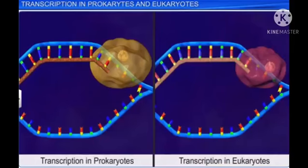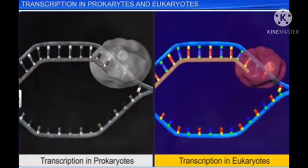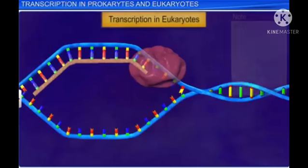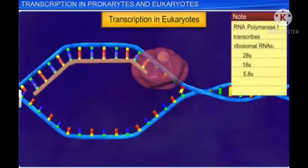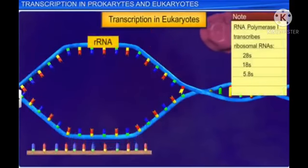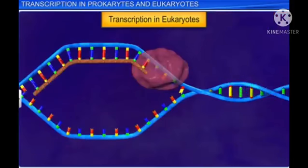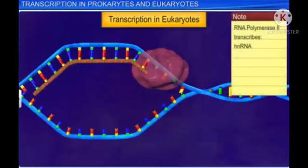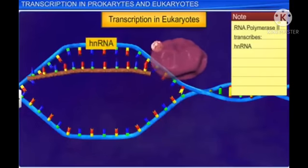There is only one RNA polymerase in prokaryotic transcription. However, eukaryotic transcription involves at least three RNA polymerases. RNA polymerase 1 transcribes various rRNAs. RNA polymerase 2 transcribes the precursor of mRNA, known as heterogeneous nuclear RNA or HnRNA.